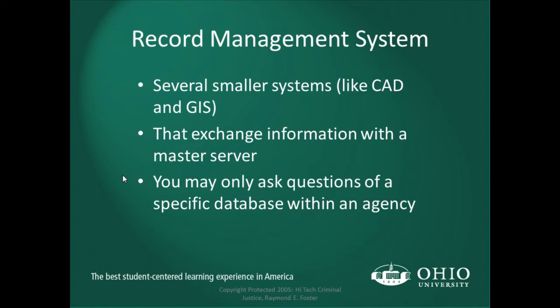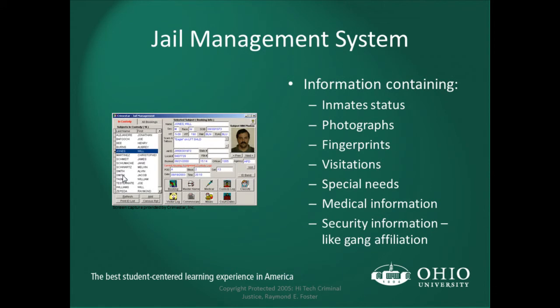Records management systems — there are several smaller systems like CAD and RMS. The records management system is the warehouse of information for all records contained within an agency. You may only have the ability to query certain parts of those database systems. The jail management system is pretty straightforward — it contains information about inmate status, photographs, fingerprints, visitation records, special needs, scars, marks, tattoos, medical records, and medical histories — all the information a jail system uses to process prisoners.